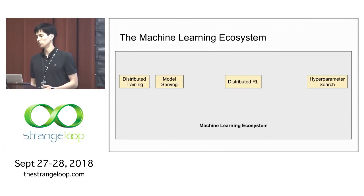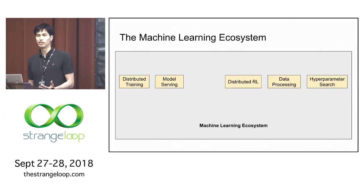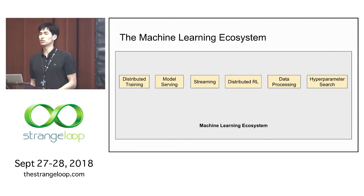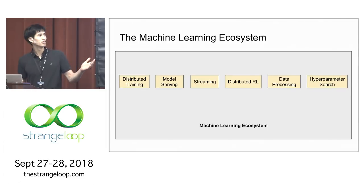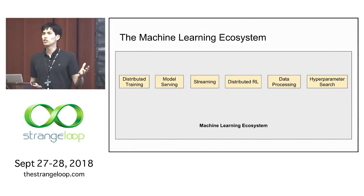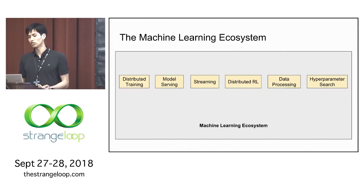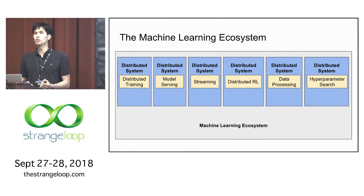In order to run these experiments, you often need data—loading it from somewhere, processing it, transforming it, and feeding it into your application, potentially from a streaming data source as well. All of these represent computational patterns or components that appear in many machine learning applications. Today, each of these components is implemented as a standalone distributed system.